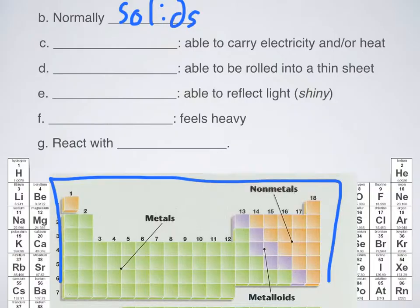The next term means the ability to carry electricity and or heat, and that's what we call a good conductor. Conductors are things that help to carry electrical charge or heat, and metals are excellent ones. That's why we use them in electronic devices.